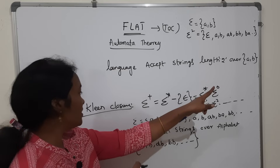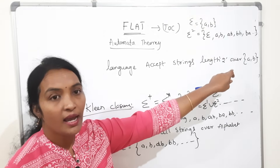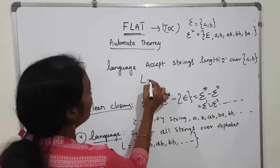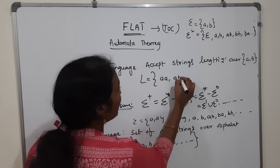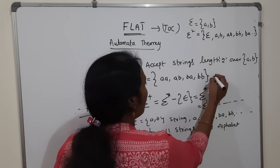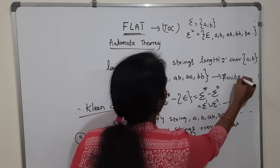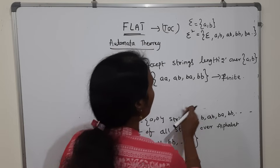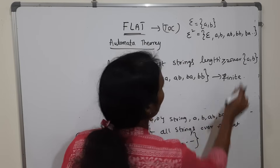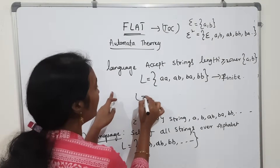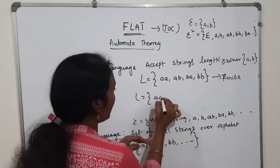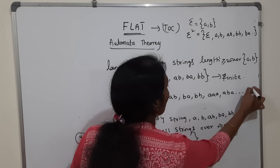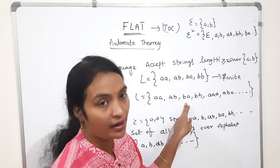For example, over alphabet {A, B}, consider a string of length 2. We want to define a language with length 2. Such a language would be: AA, AB, BA, BB — this is a finite set of strings. Now if the condition is length greater than or equal to 2, then the language includes: AA, AB, BA, BB, AAA, ABA, and so on — that becomes an infinite set. This is how we define a language.